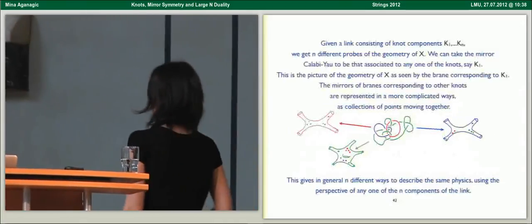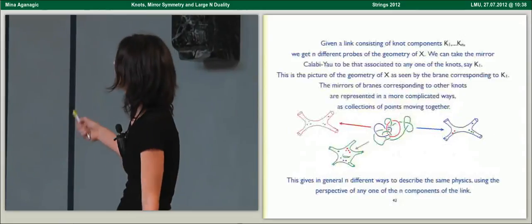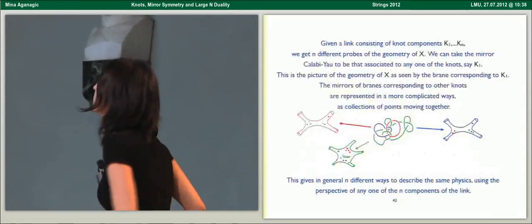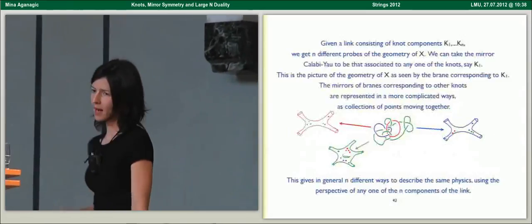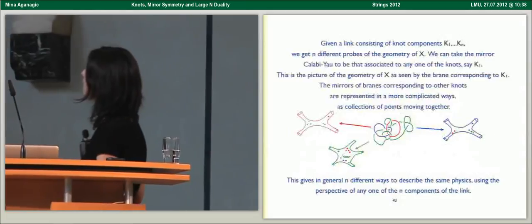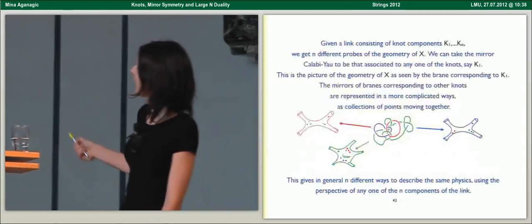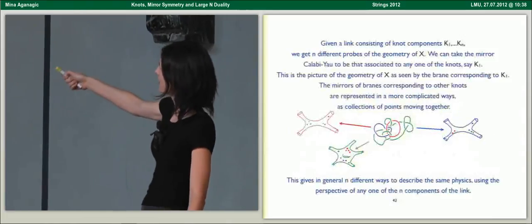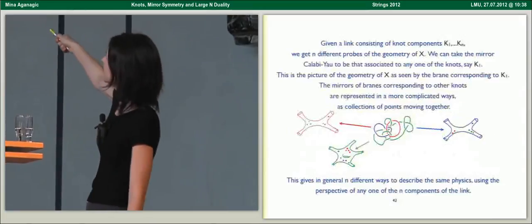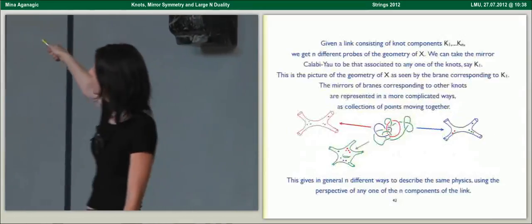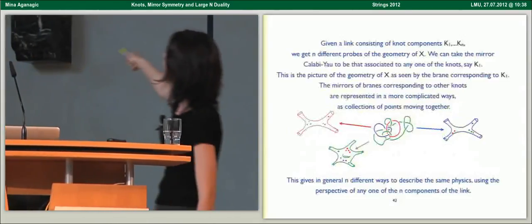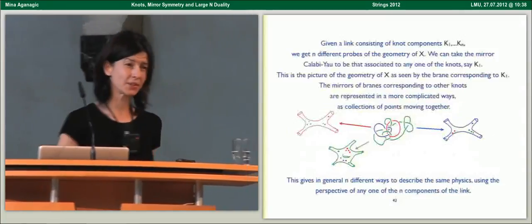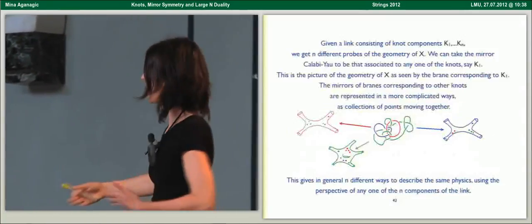This is something we've studied in this paper to appear with Tobias and Lenny. The answer is very beautiful. Suppose you consider a link with some N knot components. You get N different probes of the geometry, simply because the link involves N knots. You can take the mirror Calabi-Yau to be one associated to any one of the knot components. You will get a picture of the mirror geometry as seen by that probe brane. The other branes associated with other knot components are represented as collections of points moving together on the Riemann surface. This gives you N different ways to describe the same physics from the perspective of any one of the components.